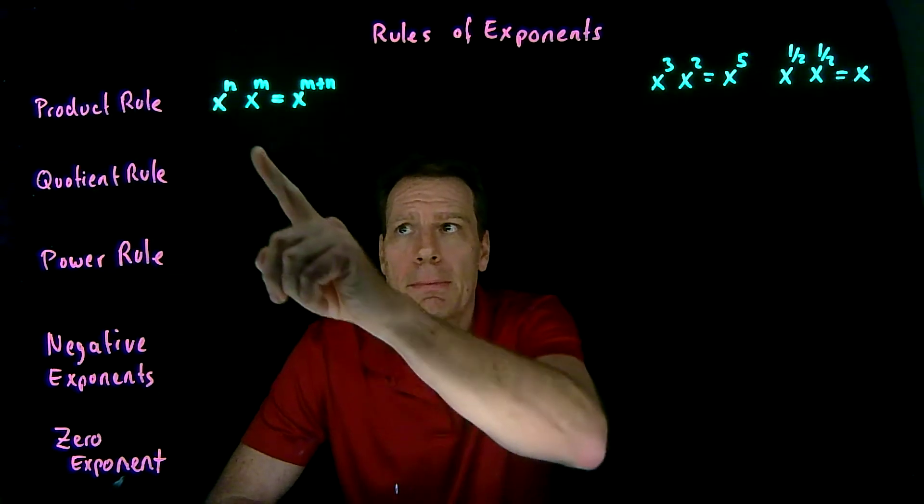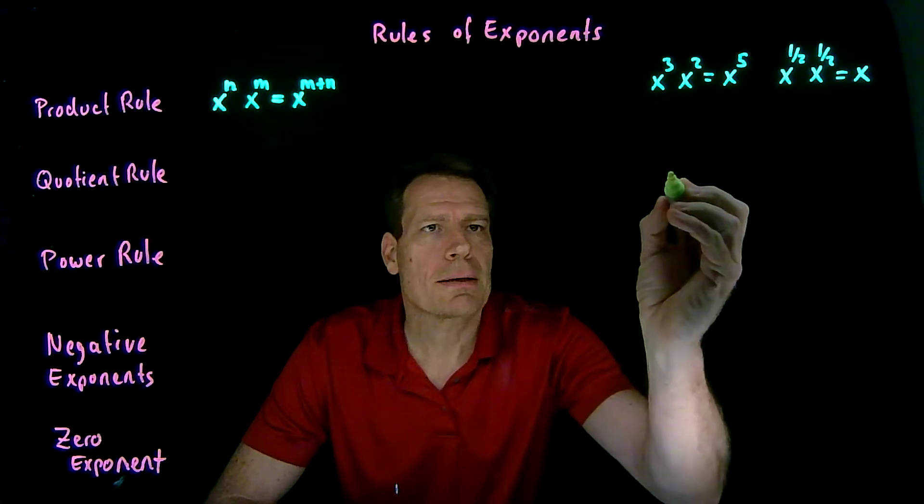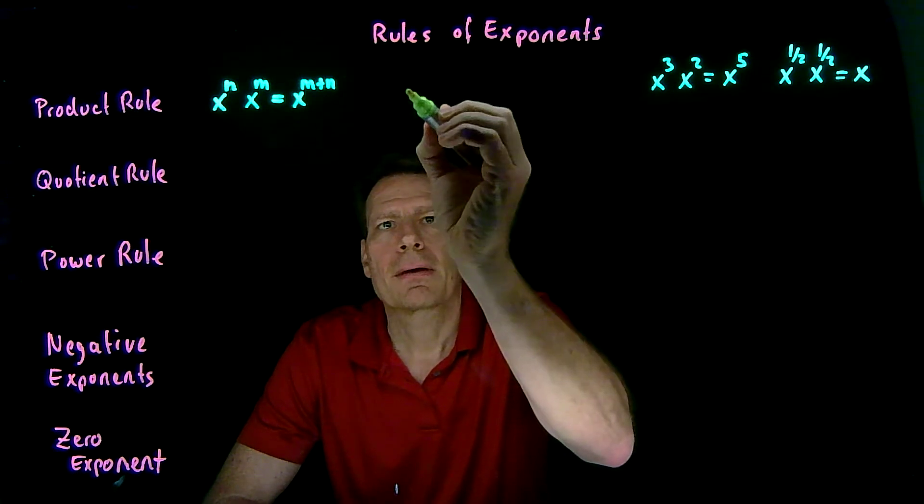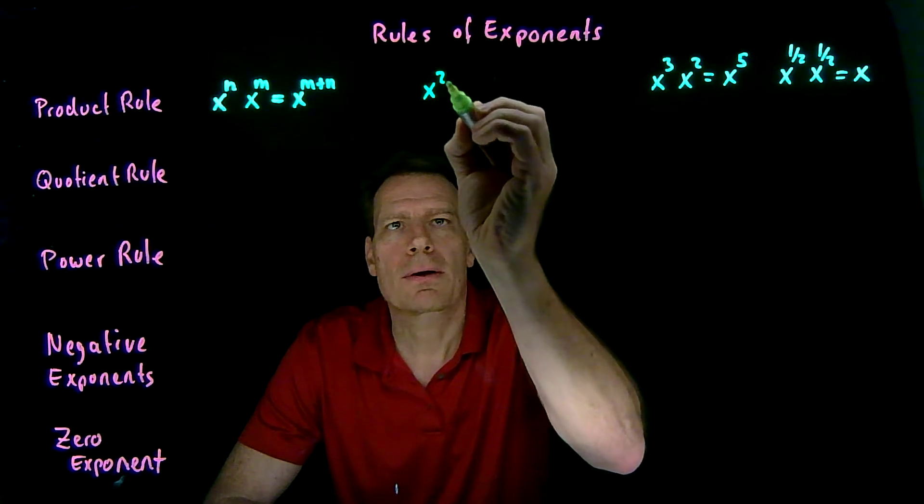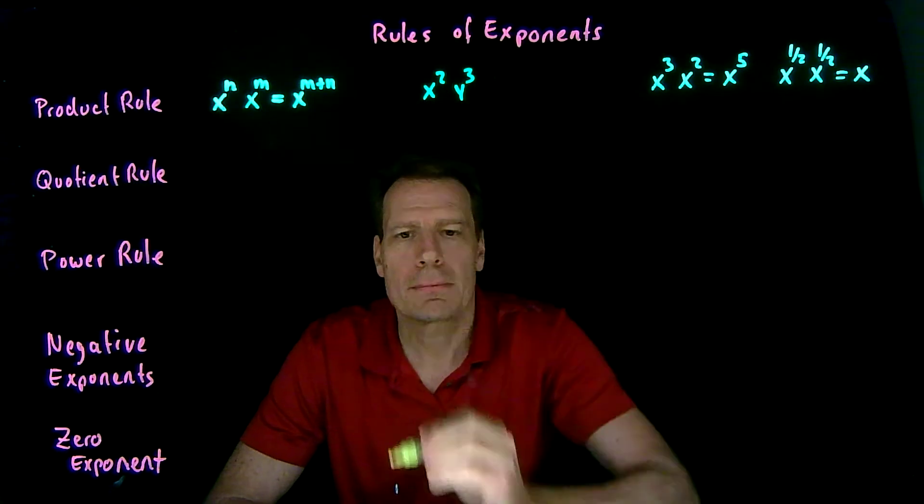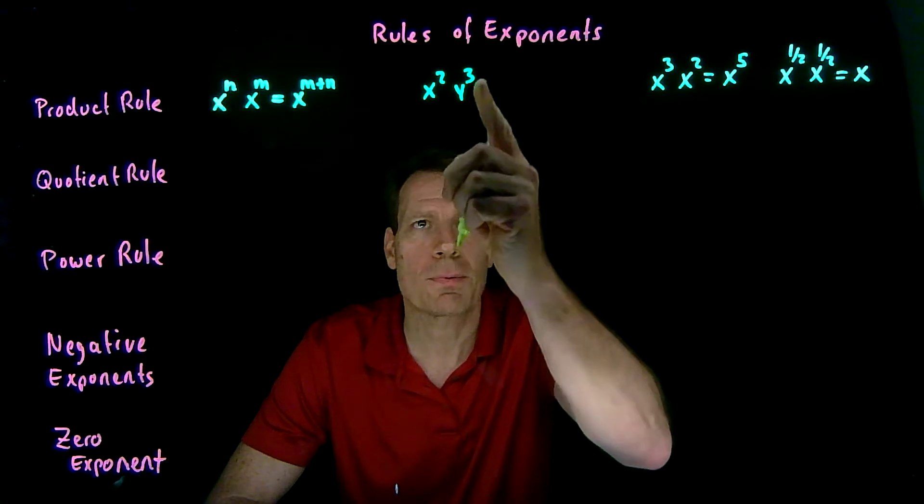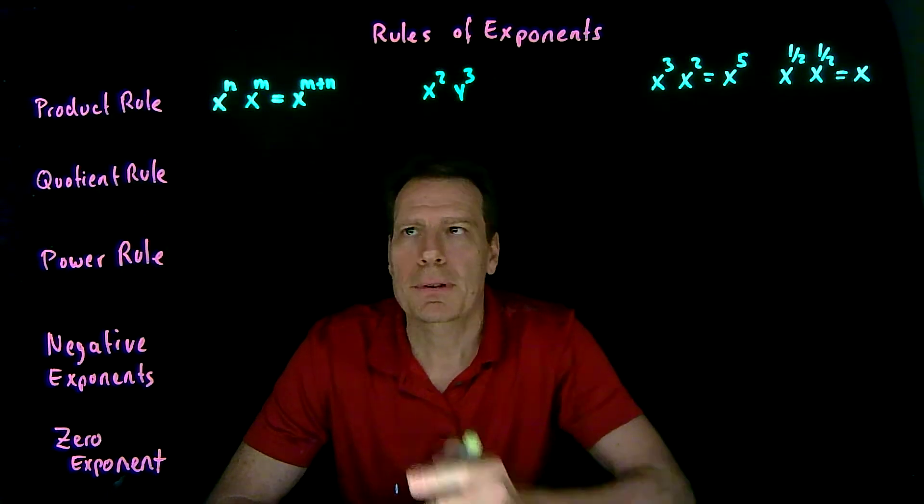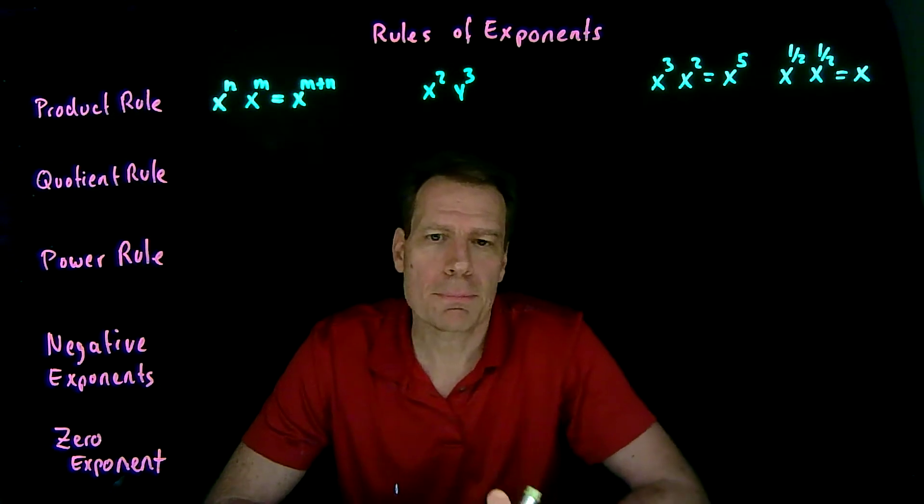Now it's important to keep in mind, these have to be the same variables. So if you had something like x squared times y to the third, there's nothing you can do, it's just x squared times y to the third. But if they're the same variables, then you can apply the product rule.